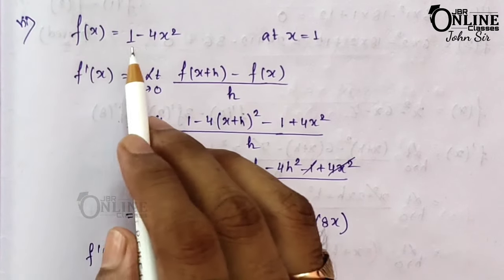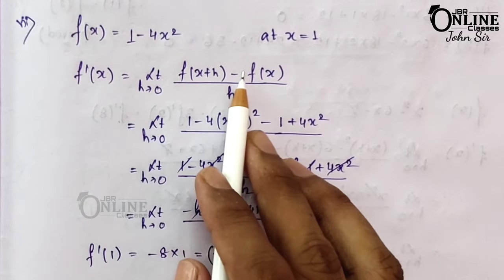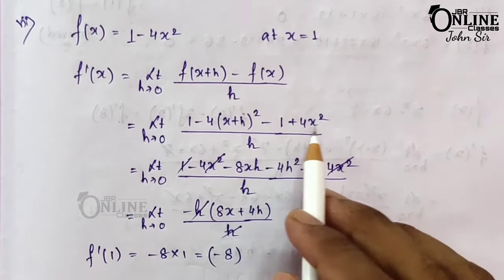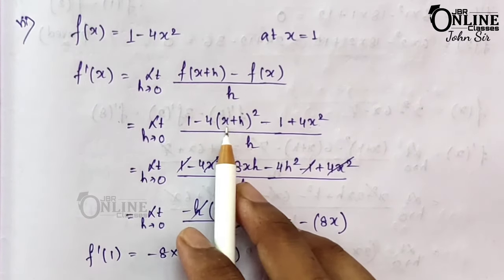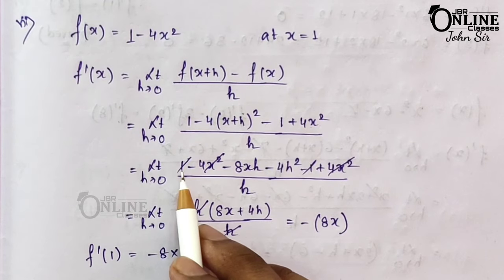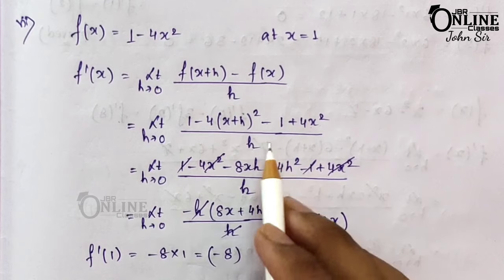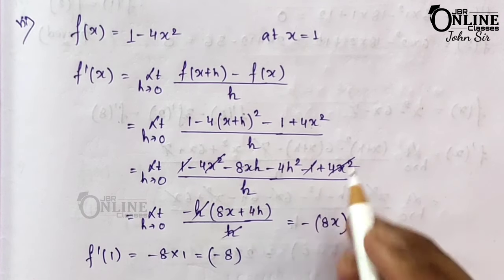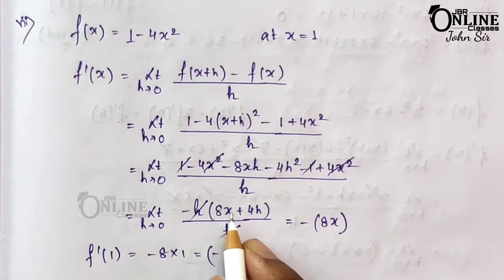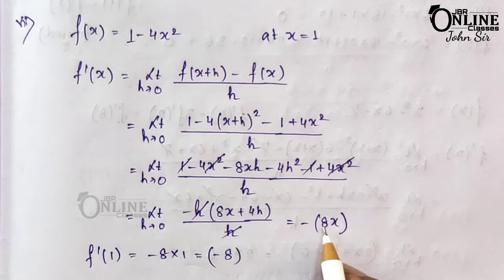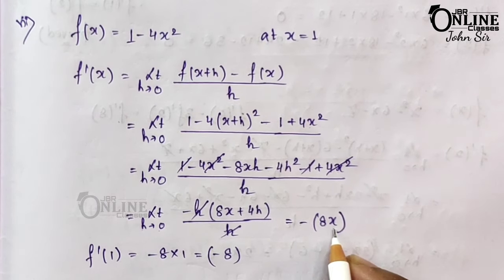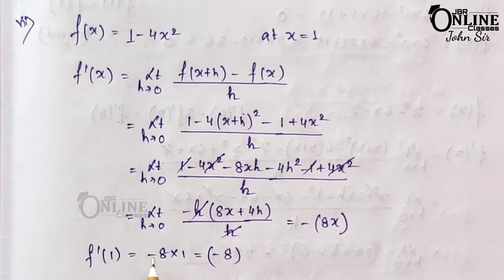Number 7: f(x) = 1 - 4x². By definition, f'(x) = limit h→0 of [1 - 4(x+h)² - (1 - 4x²)] / h. Applying (a+b)² and multiplying by 4: 1 - 4x² - 8xh - 4h² - 1 + 4x². The 4x² and 1 terms cancel; taking h common: -(8x + 4h)/h, then h cancels giving -(8x + 4h). Substituting h→0: -8x. So f'(1) = -8(1) = -8.